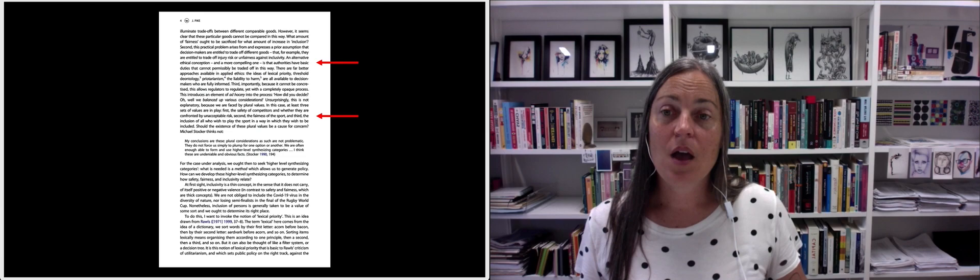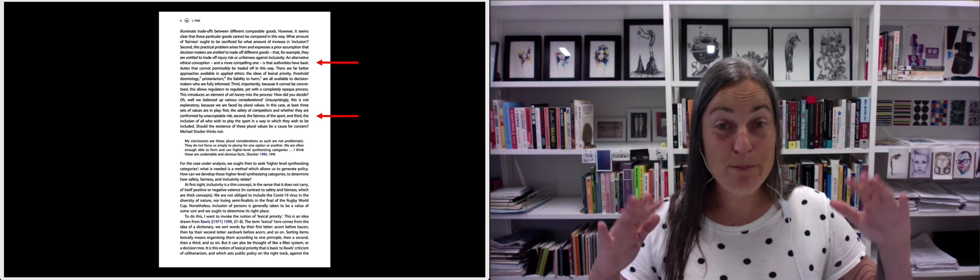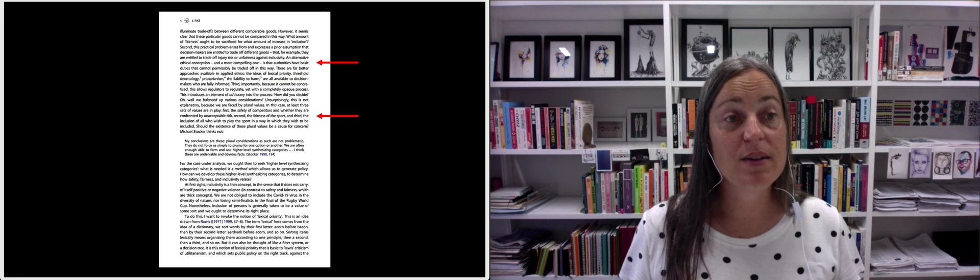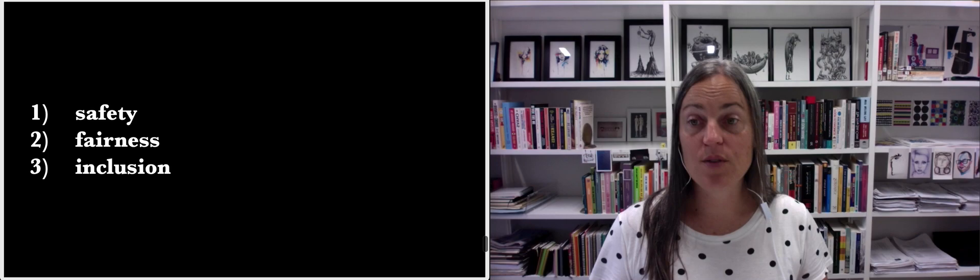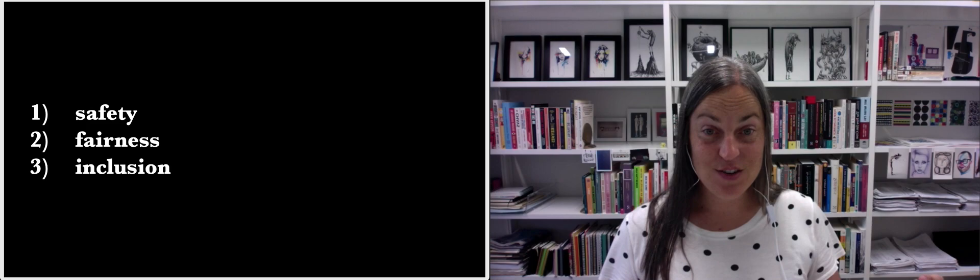Pike notes that people making policy tend to try to balance these values, but he argues in the paper that this is a bad approach. He says authorities have basic duties that cannot be permissively traded off. And he says that instead of balancing, we should put these values in priority order. Safety first, fair competition next, and inclusion last. And if we do that, activist cries that keeping males out of women's sport is not inclusive become far from compelling.